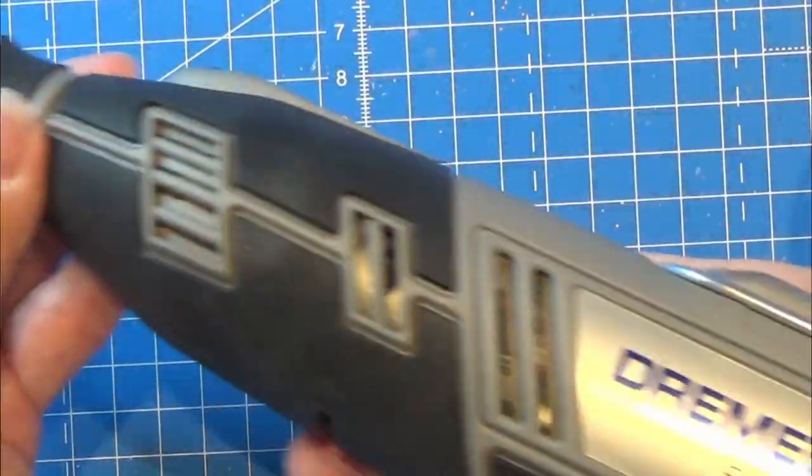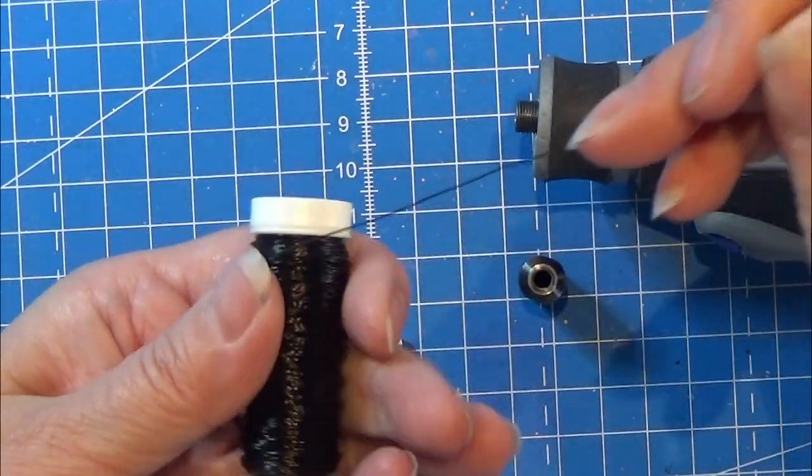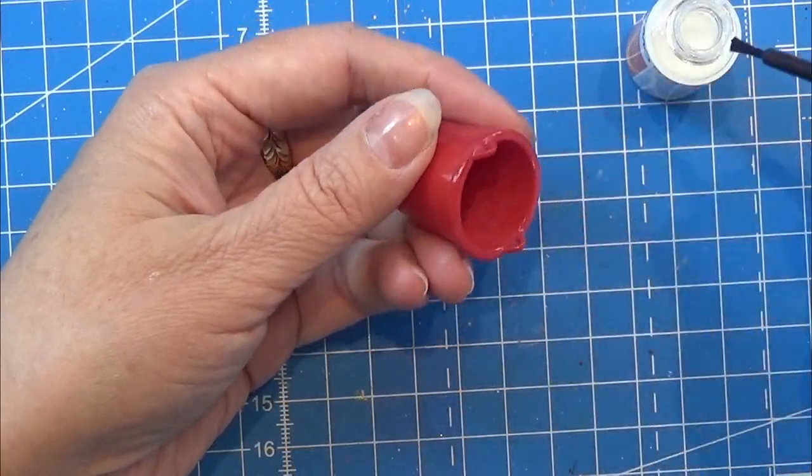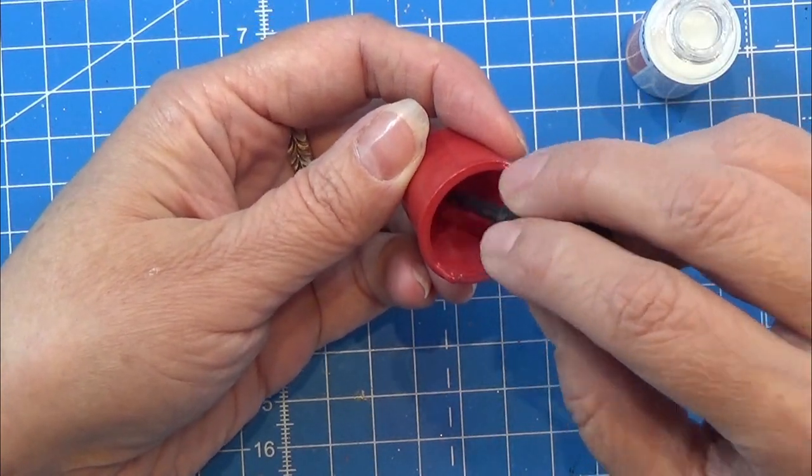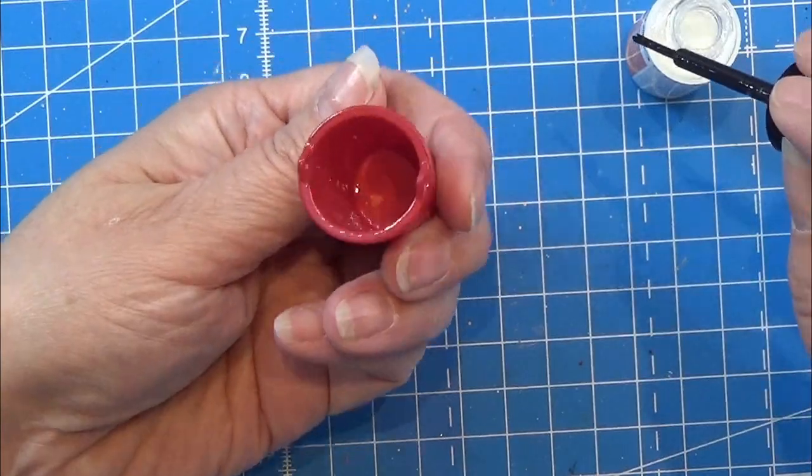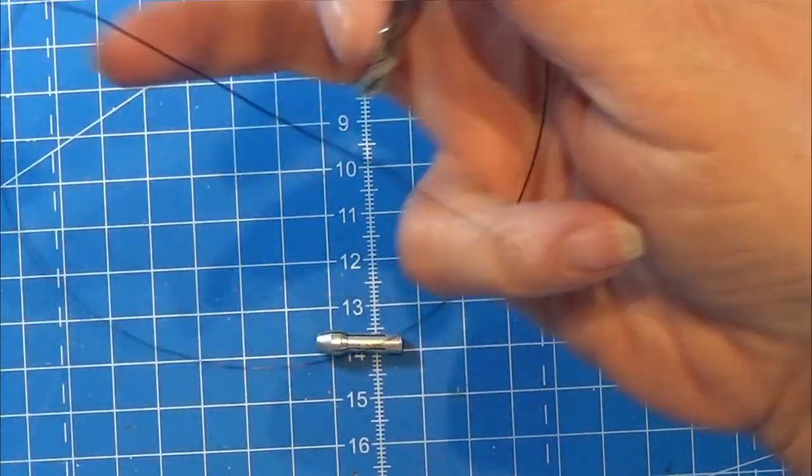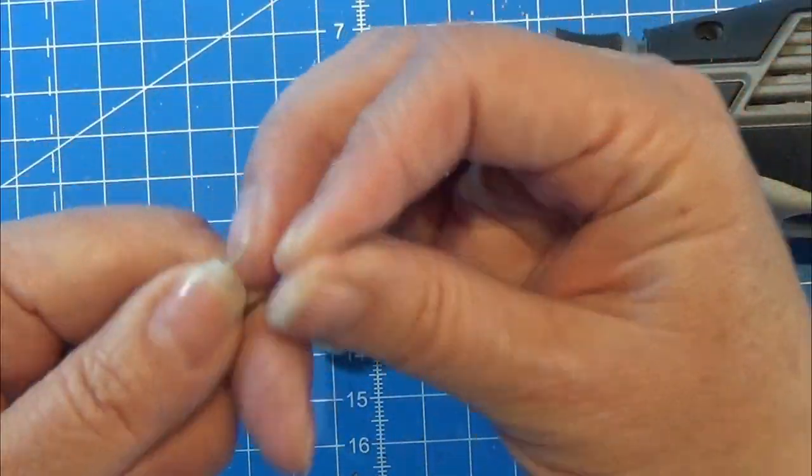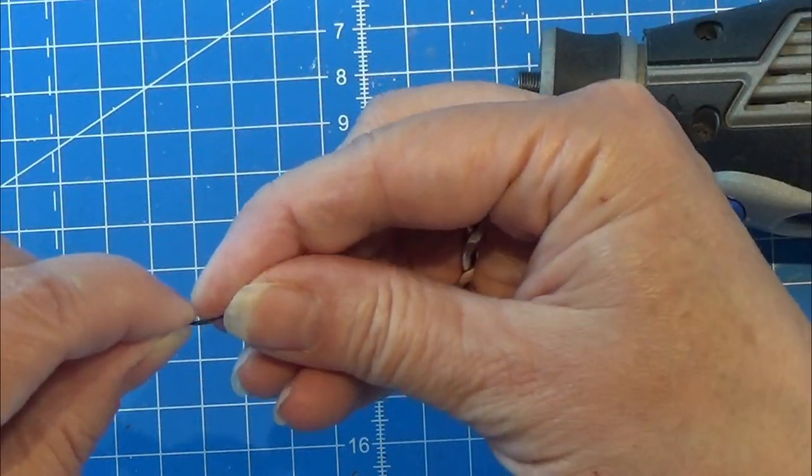Now while the bucket is drying, I am using my Dremel machine here with some thin wires. I want to make the handle of the bucket, so I am taking off quite a large piece of this wire. Well, more to say, a long piece of wire.